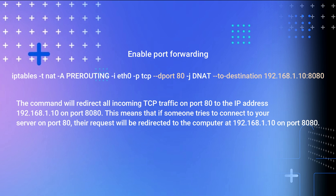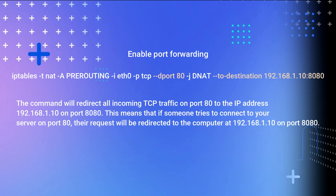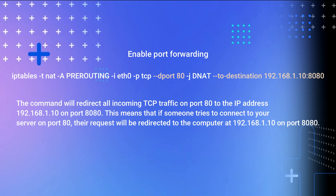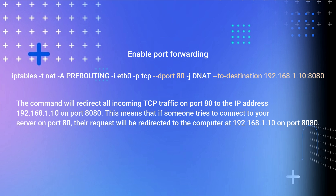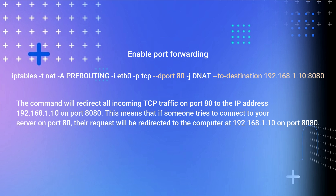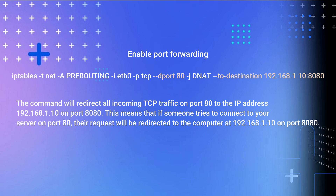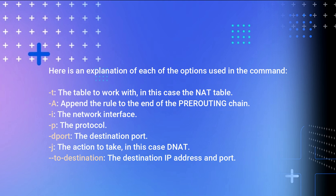Enable Port Forwarding: this command redirects all incoming TCP traffic on port 80 to the IP address 192.168.1.10 on port 8080. This means that if someone tries to connect to your server on port 80, their request will be redirected to the computer at 192.168.1.10 on port 8080.